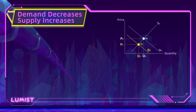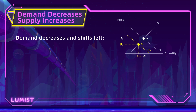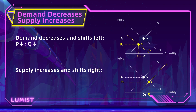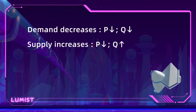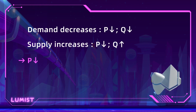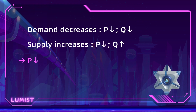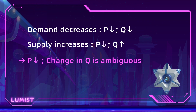Let's practice with another example. Assume consumers have a weaker preference for the good so demand decreases, while the number of producers increases so supply increases. The demand decrease alone leads to both lower price and lower quantity. However, the supply increase forces price down but quantity up. Putting these together, both changes result in a lower price, so equilibrium price definitely goes down. However, quantity moves in different directions, so the change in Q is ambiguous.